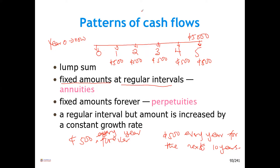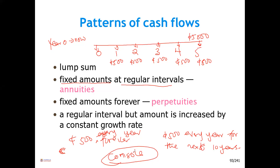Perpetuity is when you receive a fixed amount at a regular interval forever. There are some financial instruments like that — some shares where, so long as the company continues to exist, you'll receive that amount, even passing to beneficiaries when you die. When you receive a fixed amount at a regular interval forever, we call it a perpetuity. In America, there is an investment product called a consol — a consol is an example of perpetuity. It is an investment product that allows you to receive money forever.